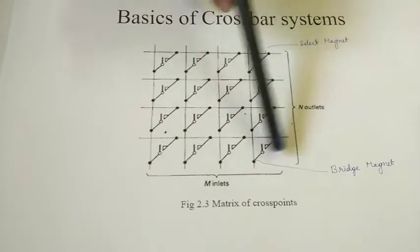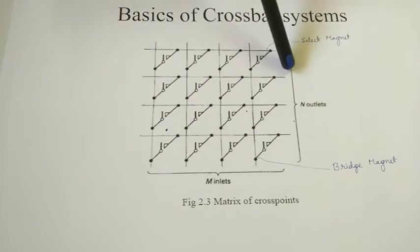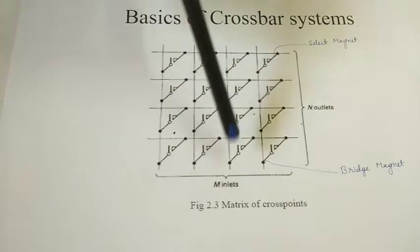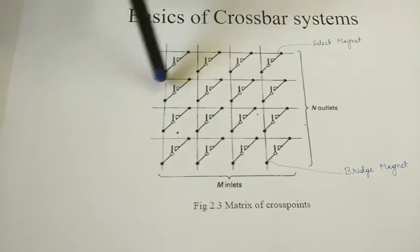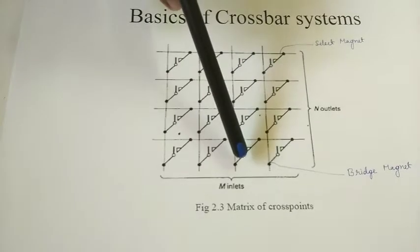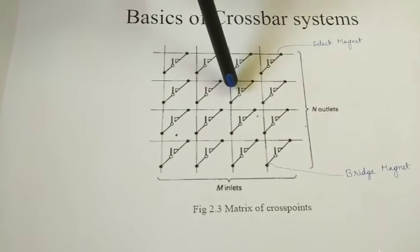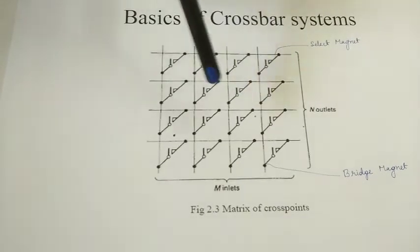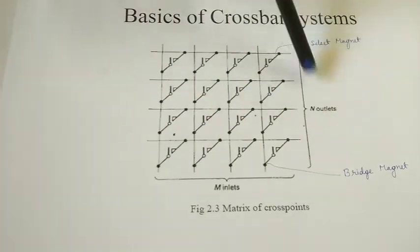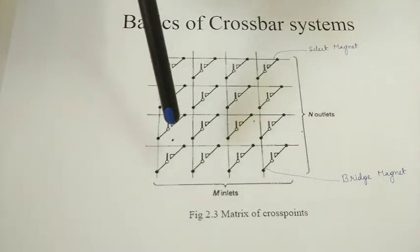Up means it is released. The bridge magnet will always be connected to the line. Suppose we assume this second line — this point has to be connected, meaning this horizontal magnet and this vertical magnet have to work. First the select magnet goes down, then afterwards all the bridge magnets are connected. So whichever line is to be connected, that magnet has to be connected to the vertical line, meaning this point is connected.